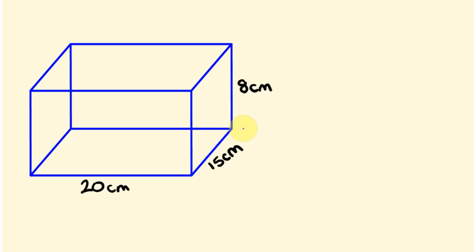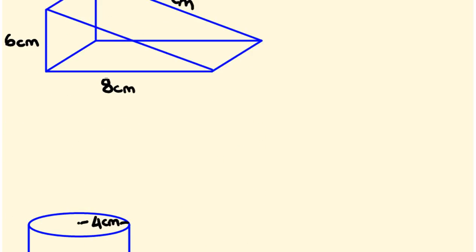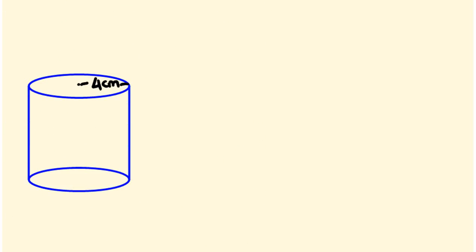The way we measure this is in cubic units — the amount of space this particular rectangular prism here occupies. We're going to be looking at how to work out the volume of rectangular prisms, as well as triangular prisms and cylinders.